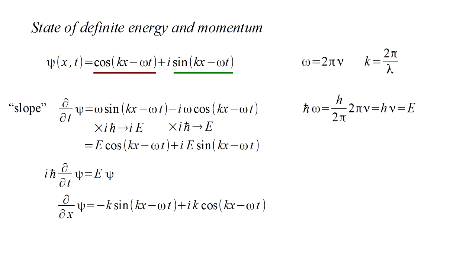Now, looking at the slope in the X space coordinate, we follow a very similar process, except we get a minus K factor in place of omega. H bar times K equals H over lambda, which is the momentum, P.